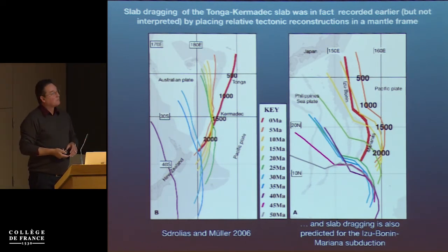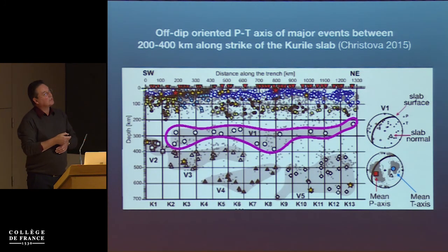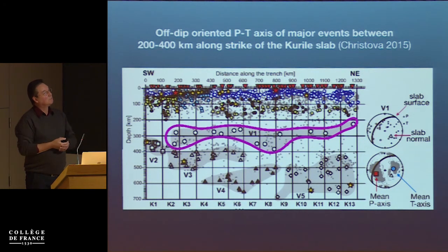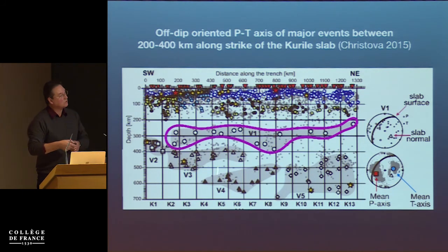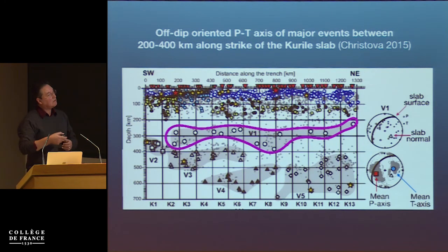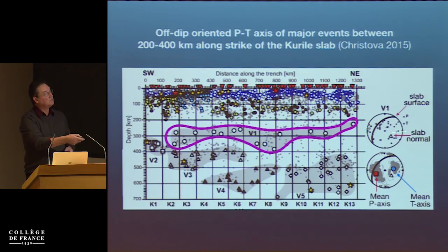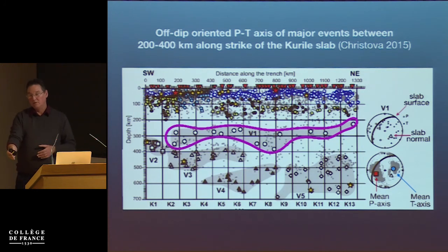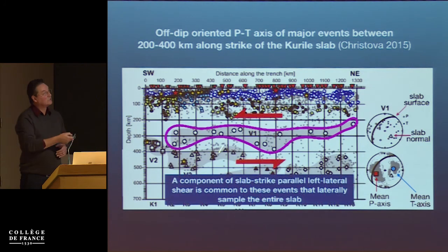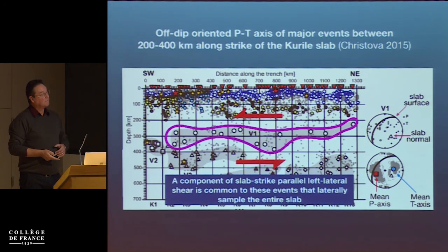Finally, a long-strike section through the Kurils — from northeast Kamchatka to southwest near Japan. This is a 2015 paper by Tchenka Kristova, who compartmentalizes the slab into segments with similar focal mechanisms. Looking at the intermediate-depth focal mechanism range, plotted on a lower-hemisphere projection showing the slab surface and normal to the slab: the average P-axis is not down-dip — it actually suggests a left-lateral sense of shear.